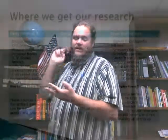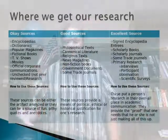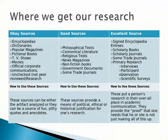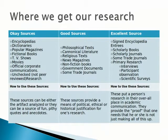To summarize, good sources include philosophical texts, canonical literature, religious texts, news sources, non-fiction books, trade journals, and government documents. Does the government ever lie to people? Yeah, they do — there are people in government sometimes out for their own gain. So government documents aren't perfect sources, but they're pretty good. These good sources can provide the means of political, ethical, or historical justification for what you're saying. That's what they're really good for. They are not, however, excellent sources.